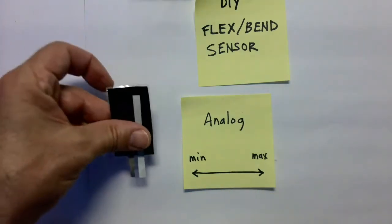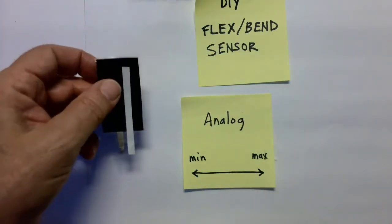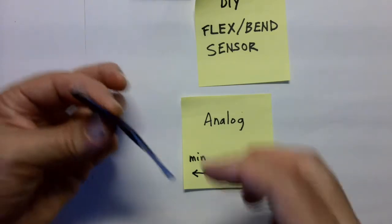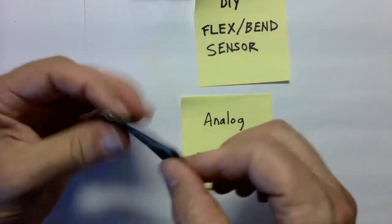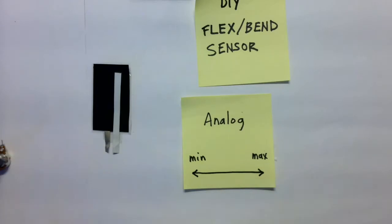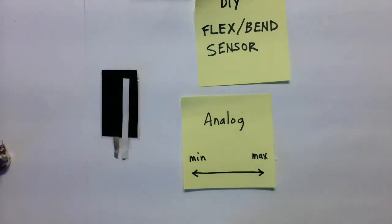So this flex sensor, you're going to be able to use it to program it to do different things, to make sounds, to make visuals, whatever. But by bending it, it's going to give you a range of numbers. There's going to be a minimum number and a maximum number. So that's the whole concept of analog. And there's all kinds of things you can do with analog.